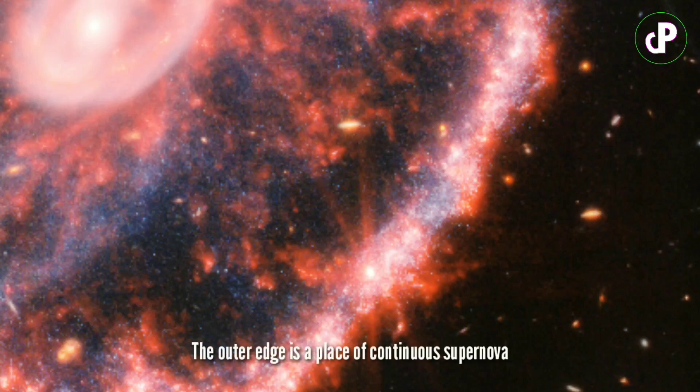The different colors you see indicate different types of galactic matter present within it. The outer edge is a place of continuous supernova explosions and star formation. That is why astronomers sometimes refer to it as a ring galaxy.